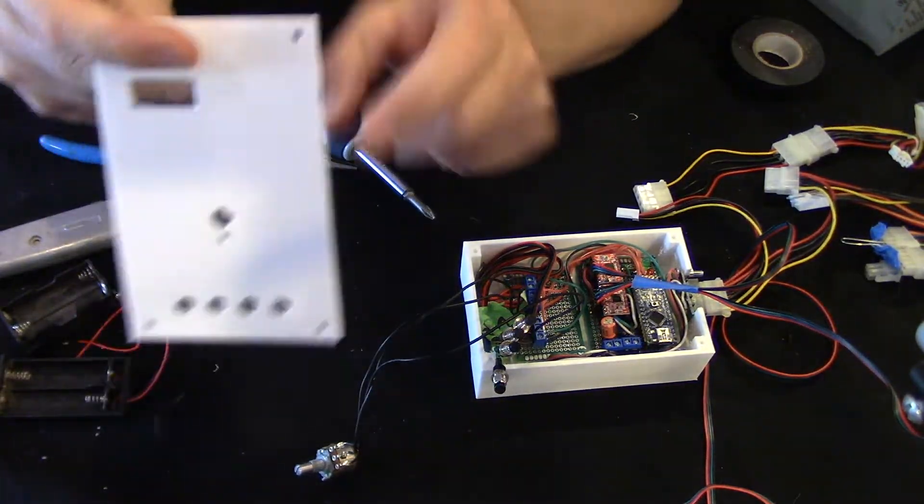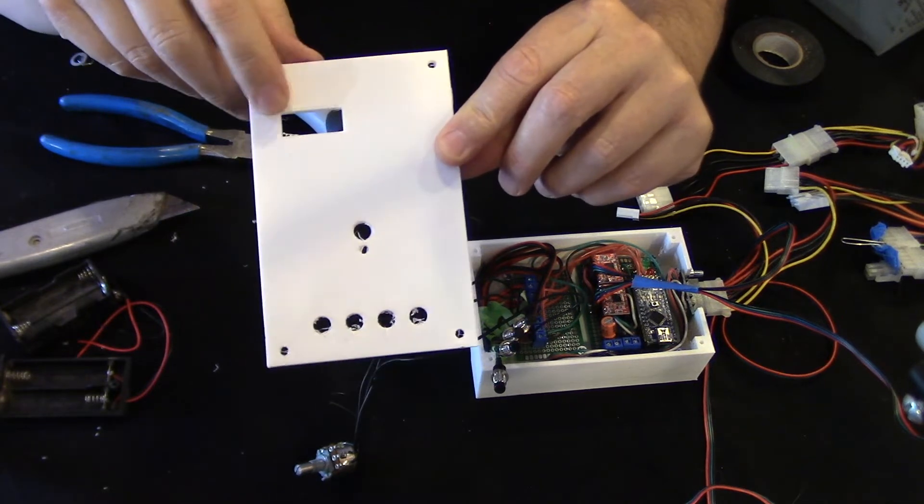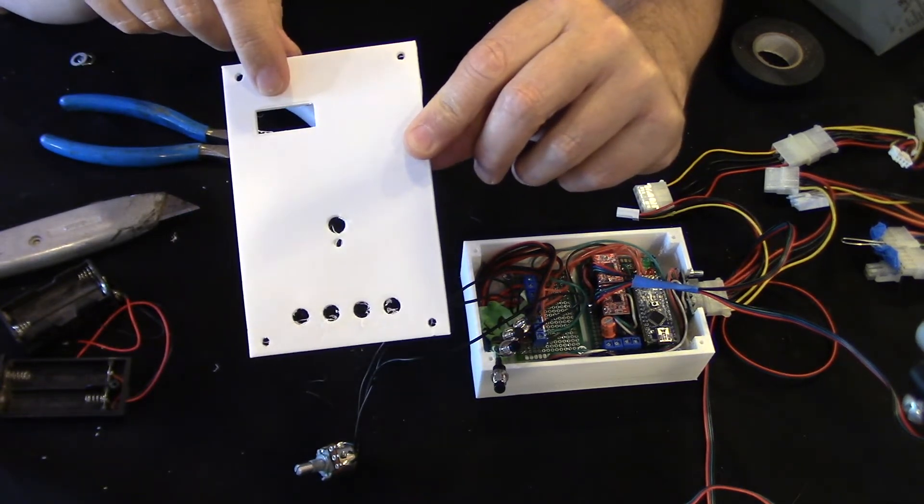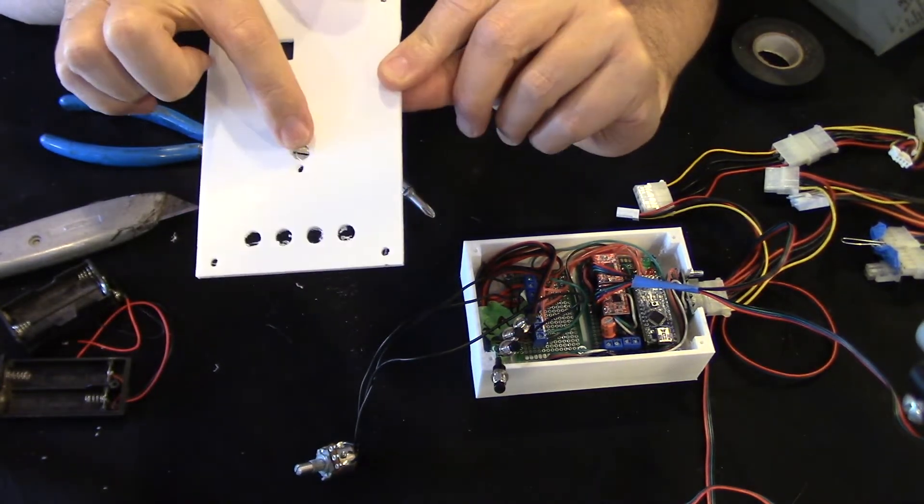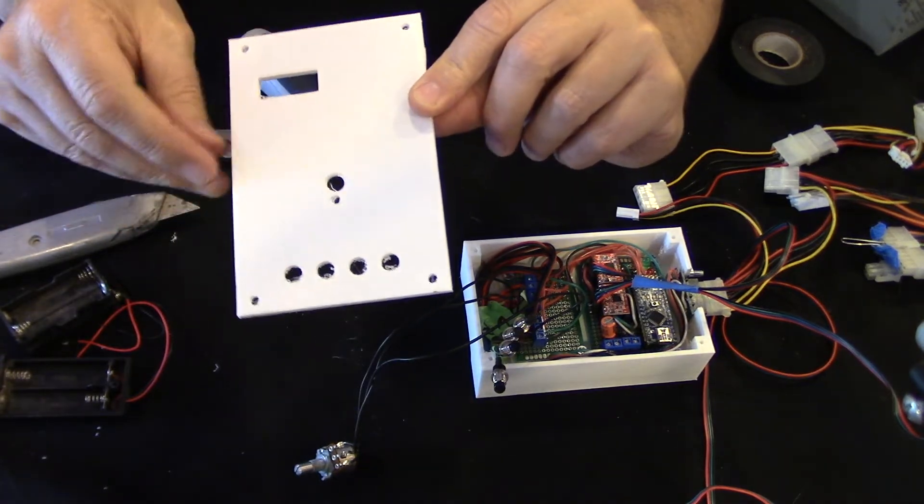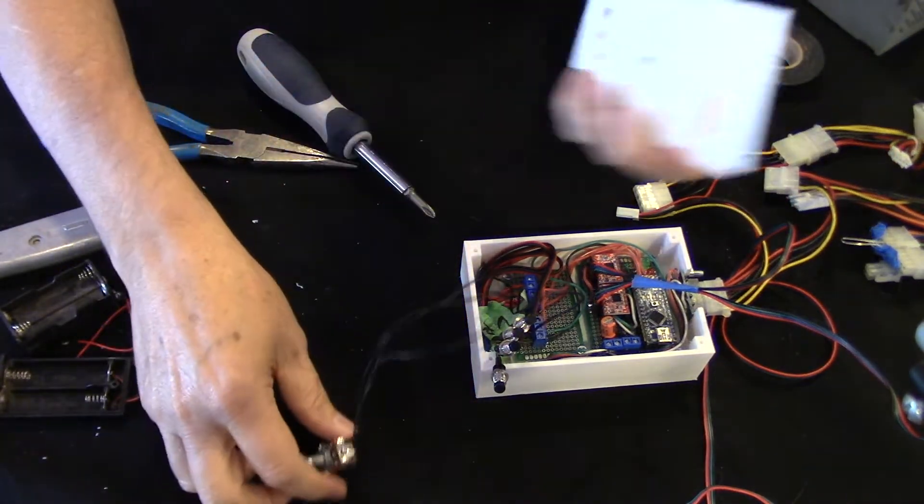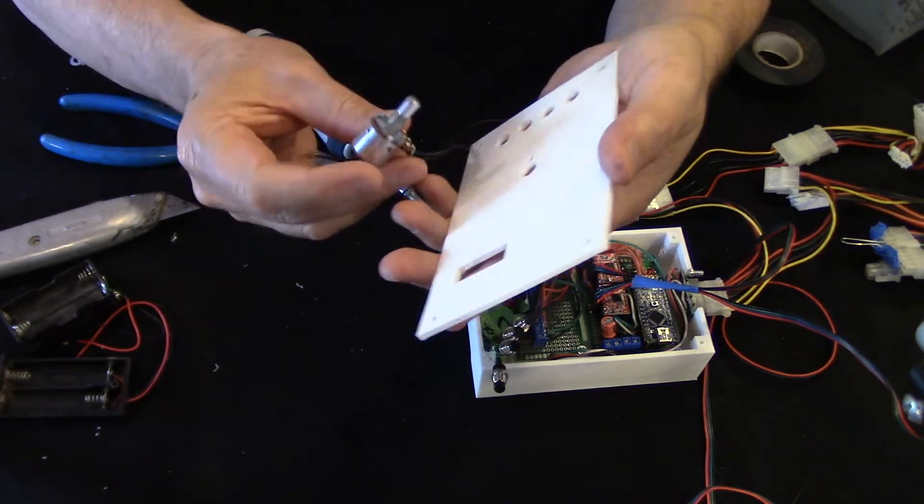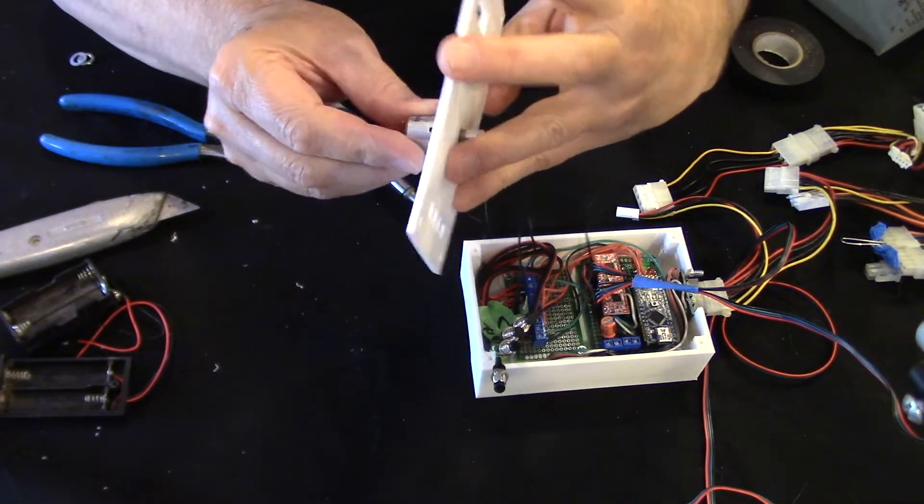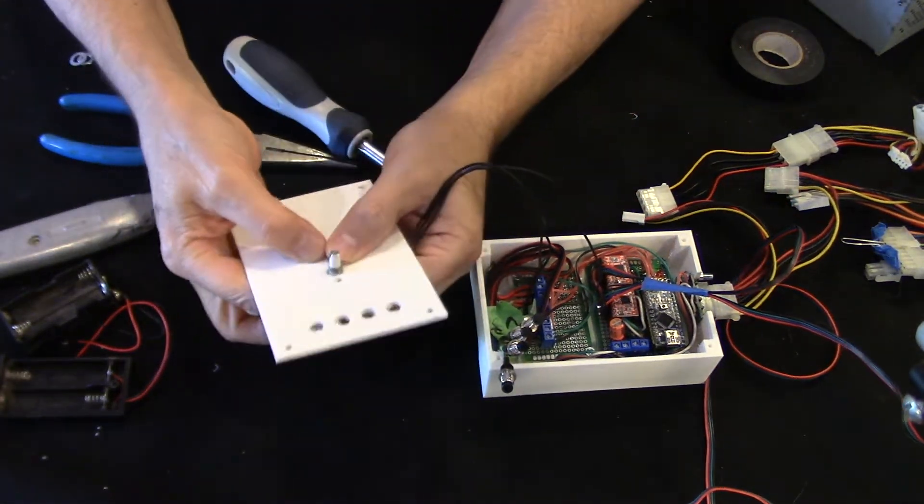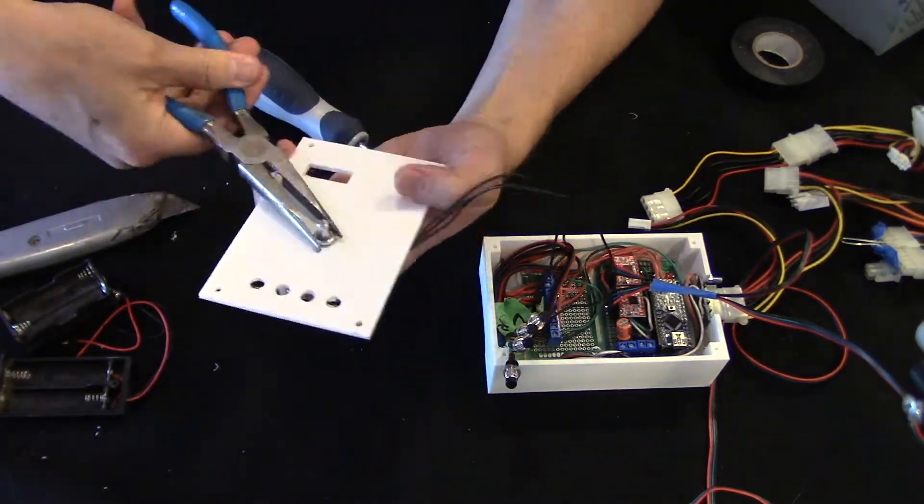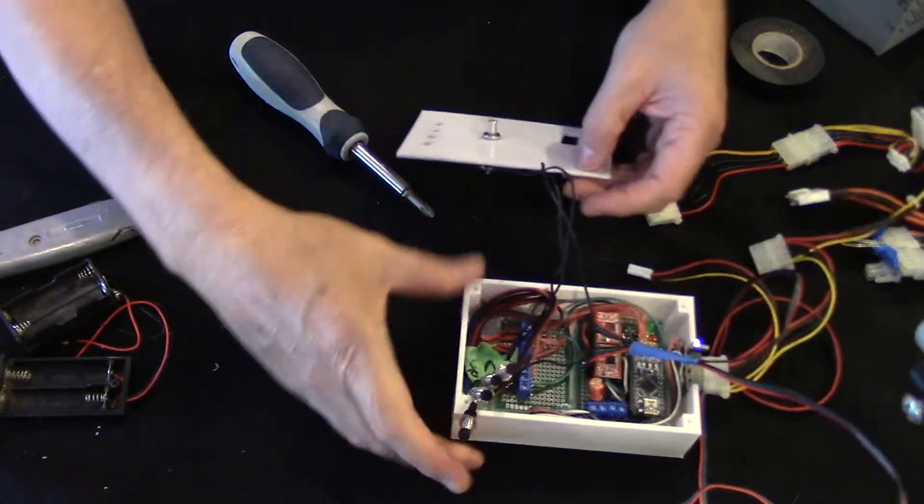Okay, so here's the top and this is a little slot here so I can see the LEDs. Here's the potentiometer and the right and left and the up and down, and then some mounting holes. So we'll go ahead and mount the potentiometer, and then I've got these labeled.